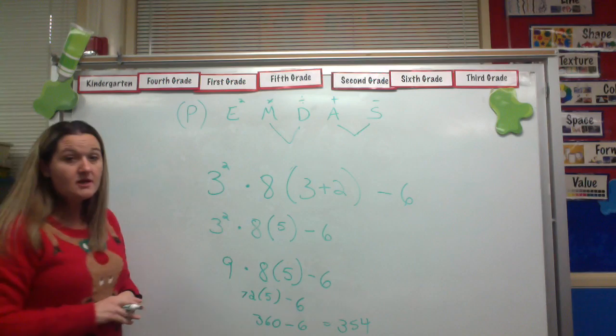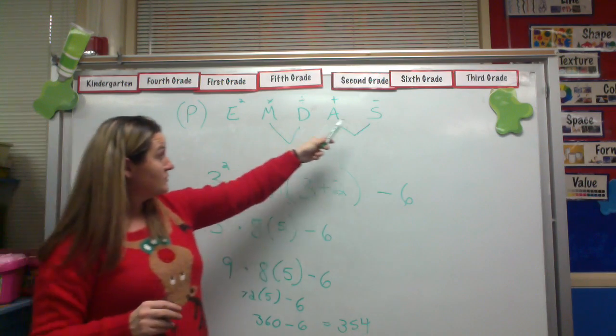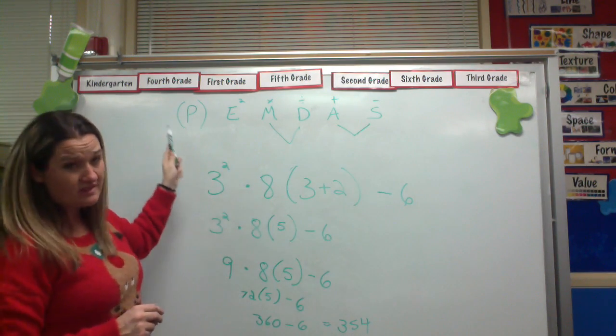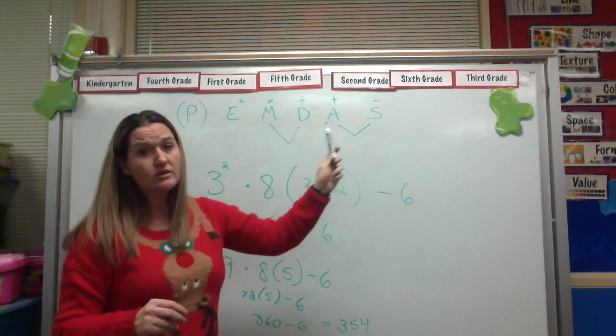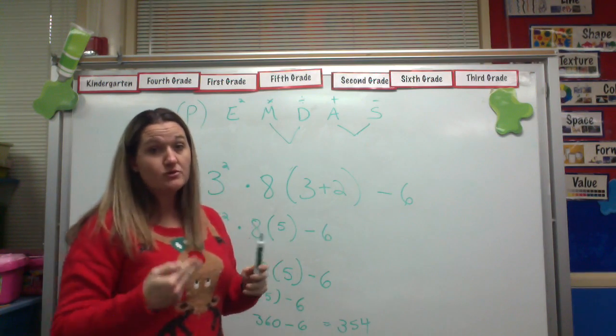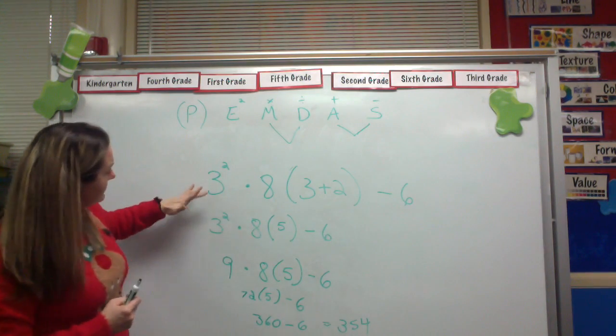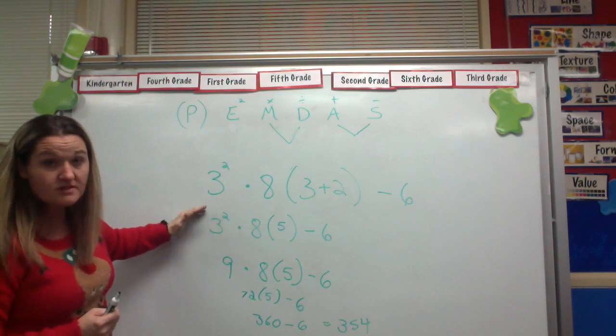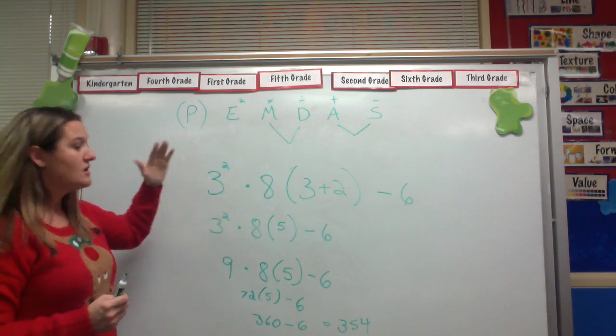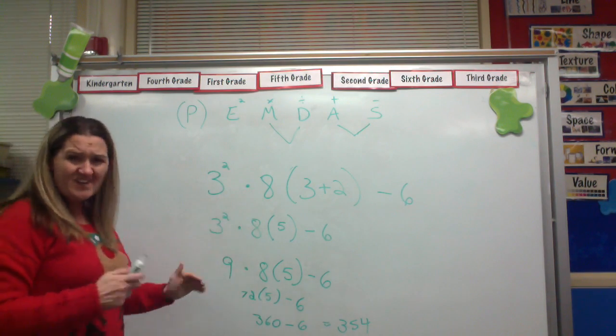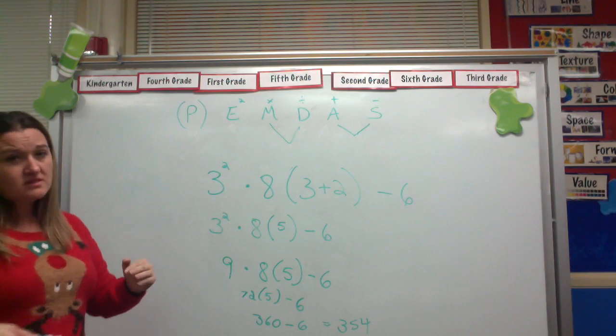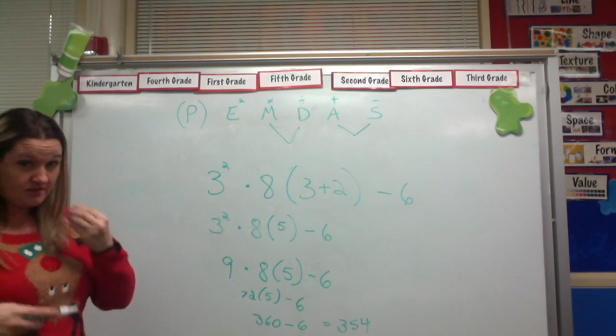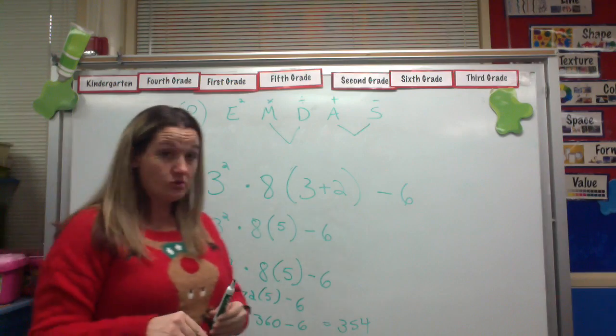All right, so that is using order of operations. So just as very methodical, just kind of make sure you're doing what you should do in the correct order. And you see how I kind of write out, I do one process or one step, rewrite it, do another step, rewrite it. And I know that seems like it's a lot of extra, but it really does kind of help just keep you on track. All right, so good luck with this section.